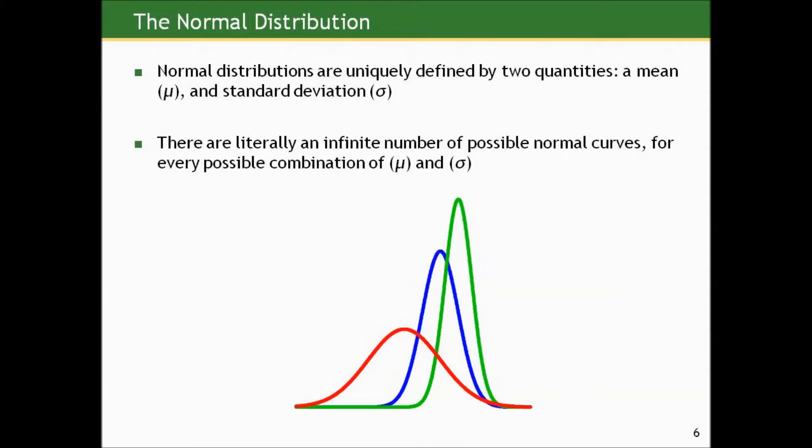Something very interesting about the normal distribution: you only need two pieces of information to perfectly describe any normal distribution. You need to know its mean μ and its standard deviation σ. Normal distributions are uniquely defined by these two quantities for the population that they theoretically describe. There are literally an infinite number of possible normal curves for every possible combination of μ and σ.